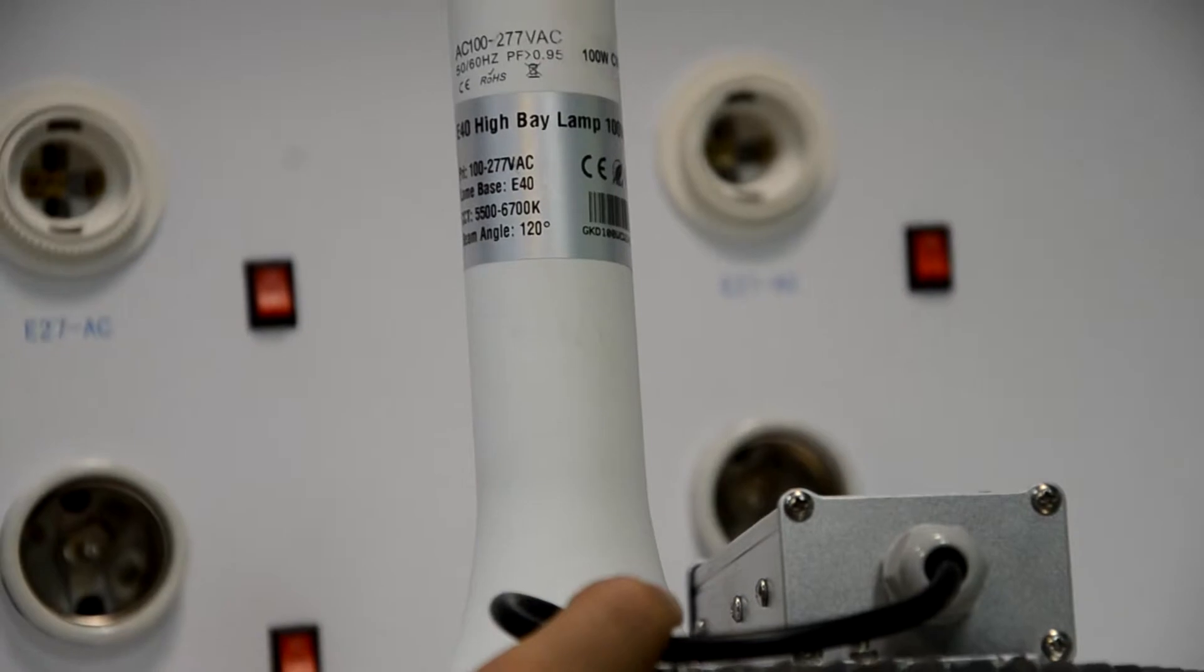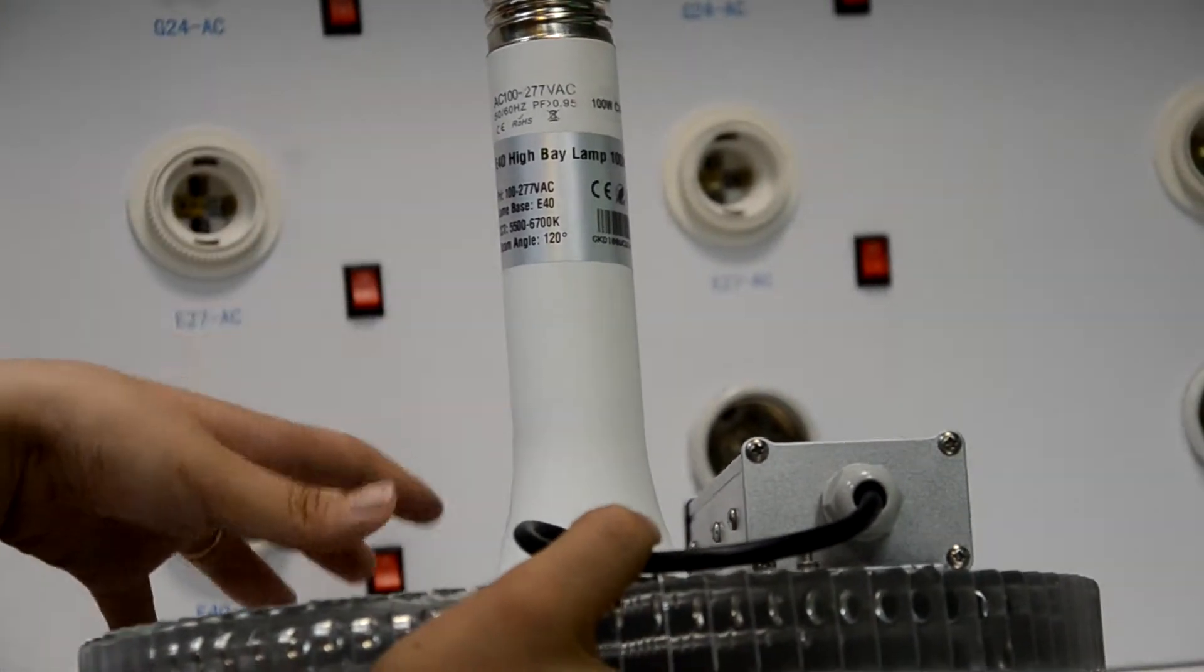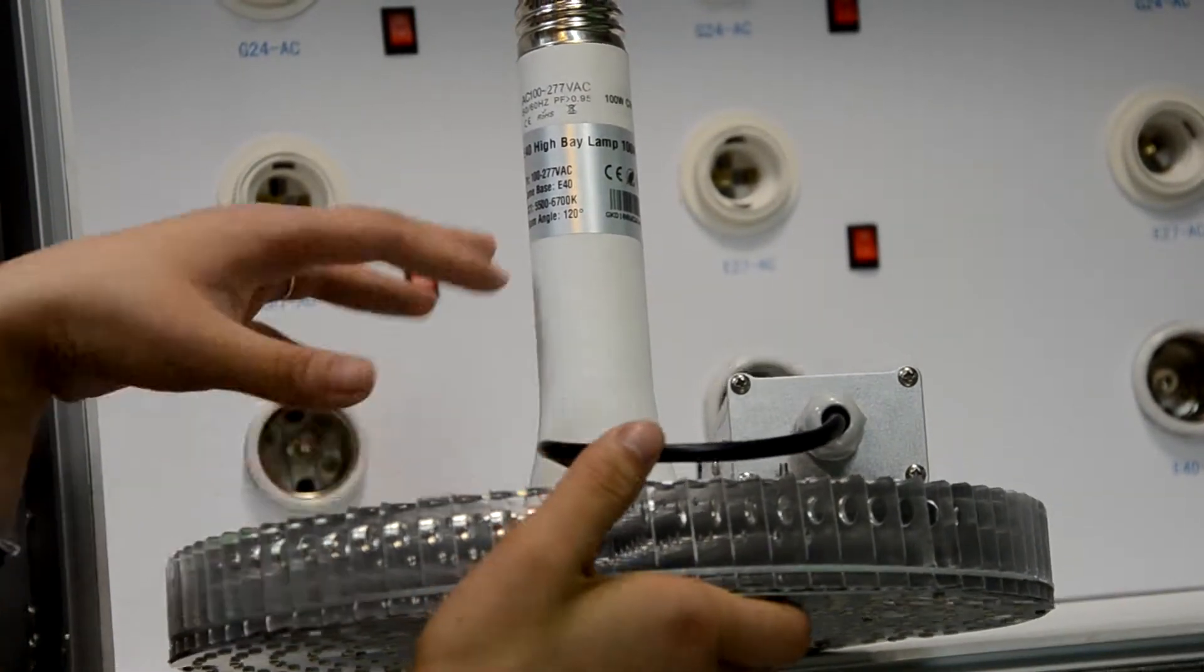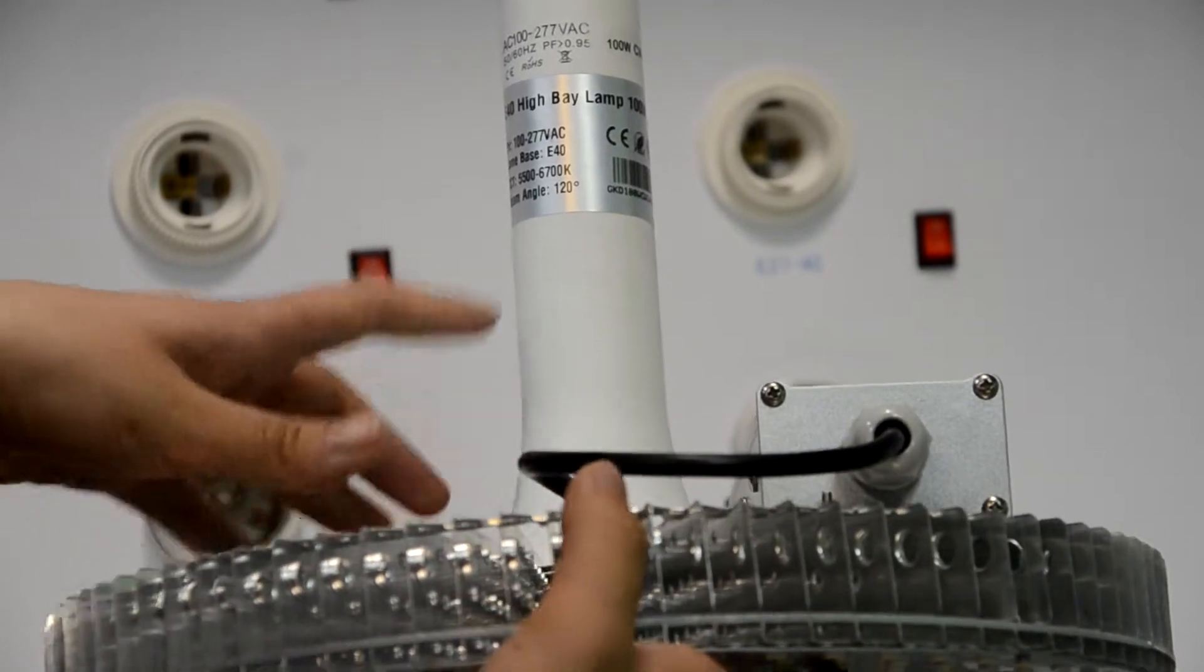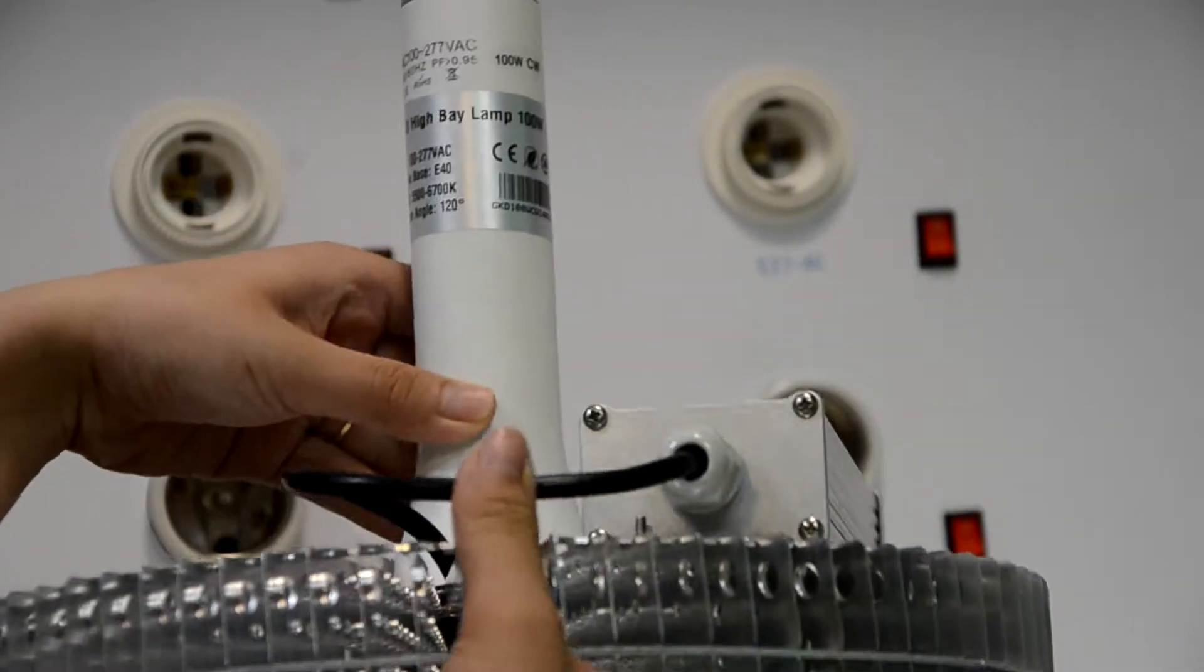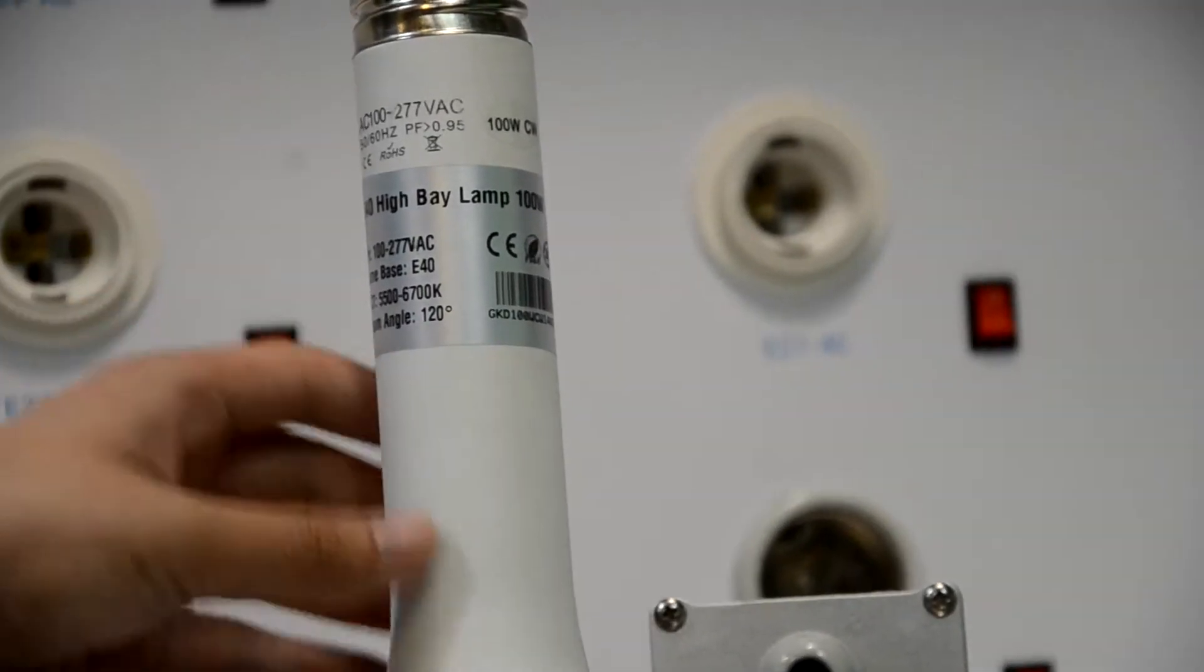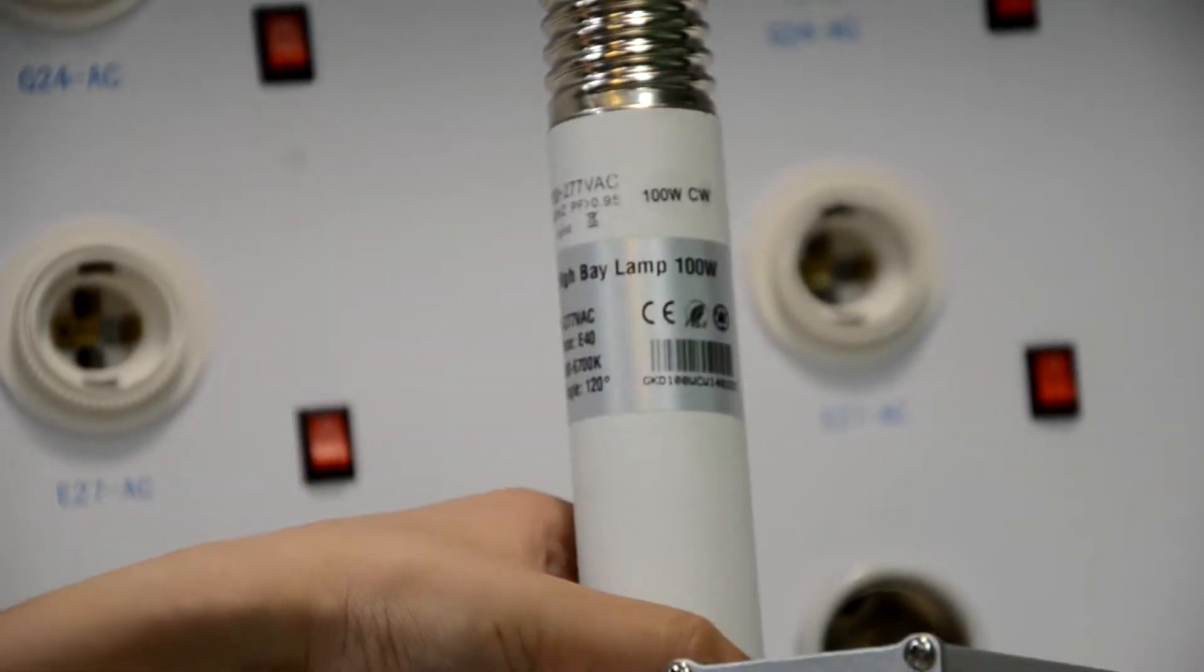Sometimes we can use an adapter or we can build E27 for you. For this model, the color temperature is 6000K and the beam angle is 120 degrees. It has CE and CUL certification on the driver, and the power factor is greater than 0.95.